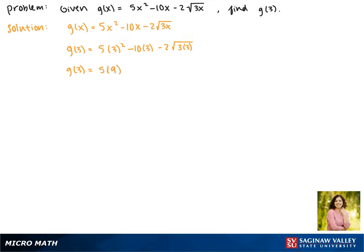10 times 3 is 30, so we're subtracting 30. And then underneath our square root, 3 times 3 gives us 9.